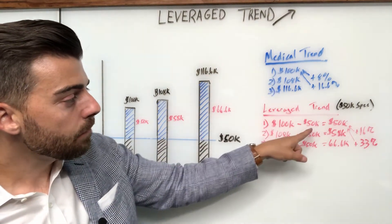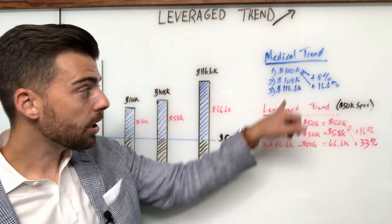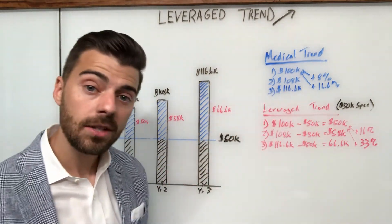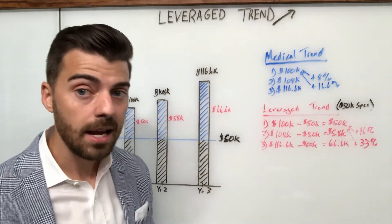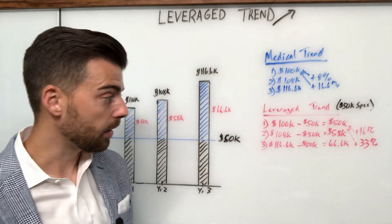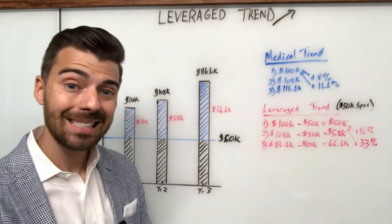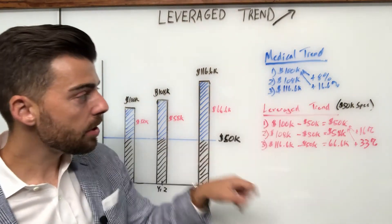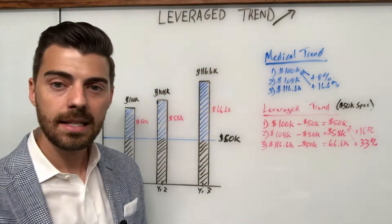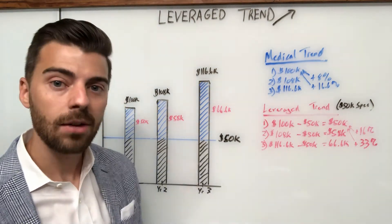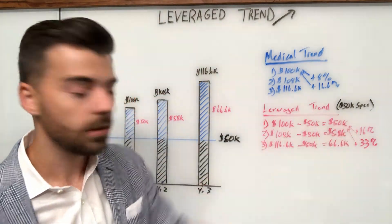Year one: $100,000 claim, $50,000 deductible, $50,000 in reimbursement. Year two: $108,000 claim, same $50,000 deductible — they're now reimbursing $58,000. That's not an eight percent trend; that's actually a 16 percent trend. So the stop-loss carrier is now paying 16 percent more in reimbursements for the exact same claim. Year three: $116,600 claim, $50,000 deductible — they're reimbursing $66,600. That's not a 16 percent increase; that's a 33 percent increase from year one.